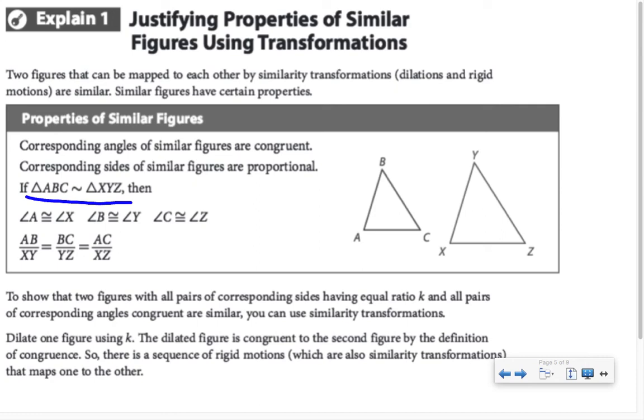With side lengths, however, because these figures are similar and not congruent, we don't say that AB is congruent to XY, but we say that AB and XY are in the same ratio as BC and YZ, and so on. In order to show that two figures with all pairs of corresponding sides have equal ratio K, we would use similarity transformations. We would dilate one figure using K, the scale factor, and the dilated figure is congruent to the second figure. If there's a sequence of rigid motions that maps that dilated figure to the end product, then the first figure is similar to the last.